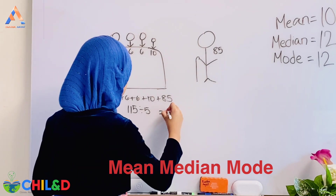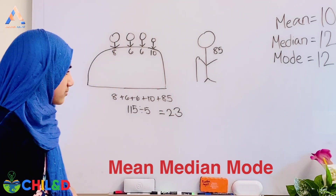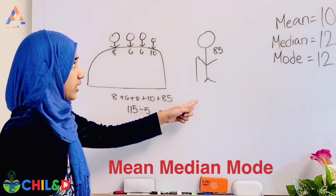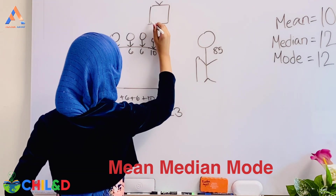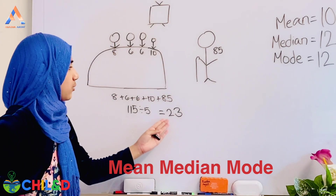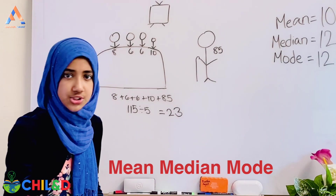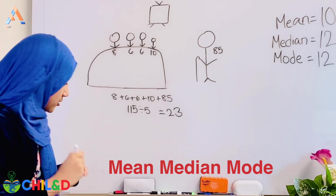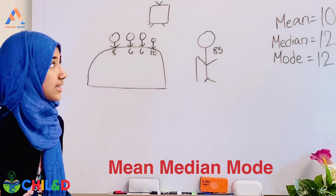The mean is 23, but the ages don't go anywhere near 23 — that would be approximately the age of a college student. So the mean is not useful here; we can't use the mean in this example.